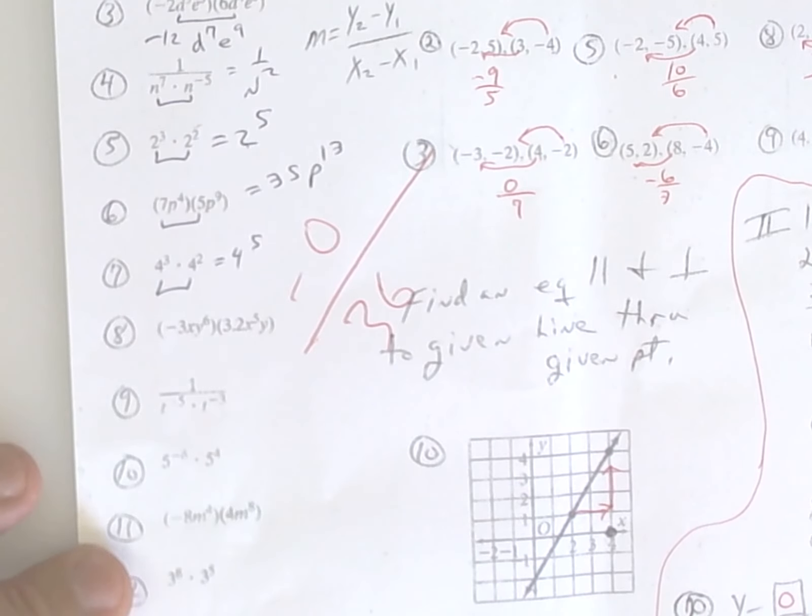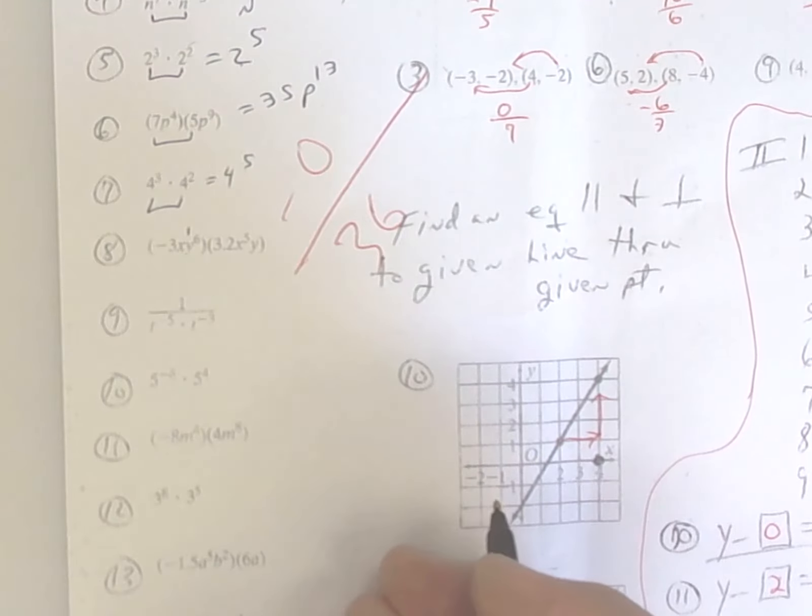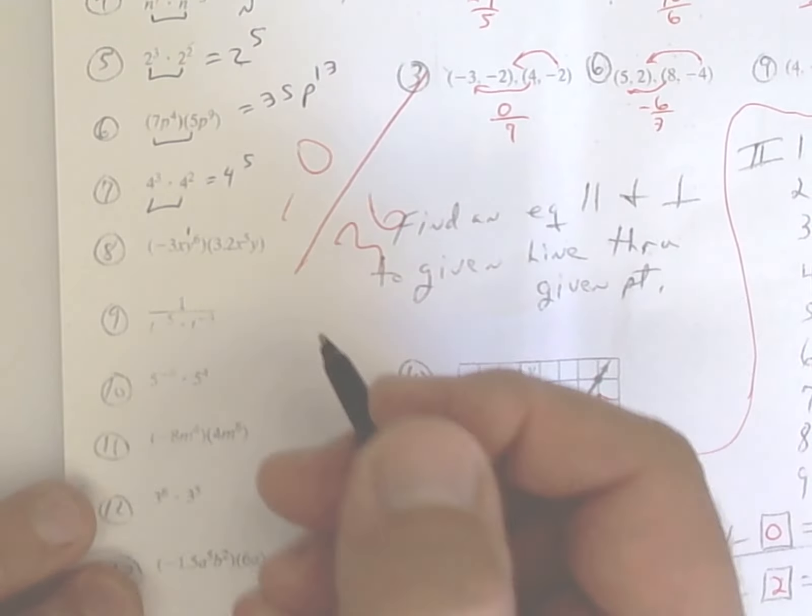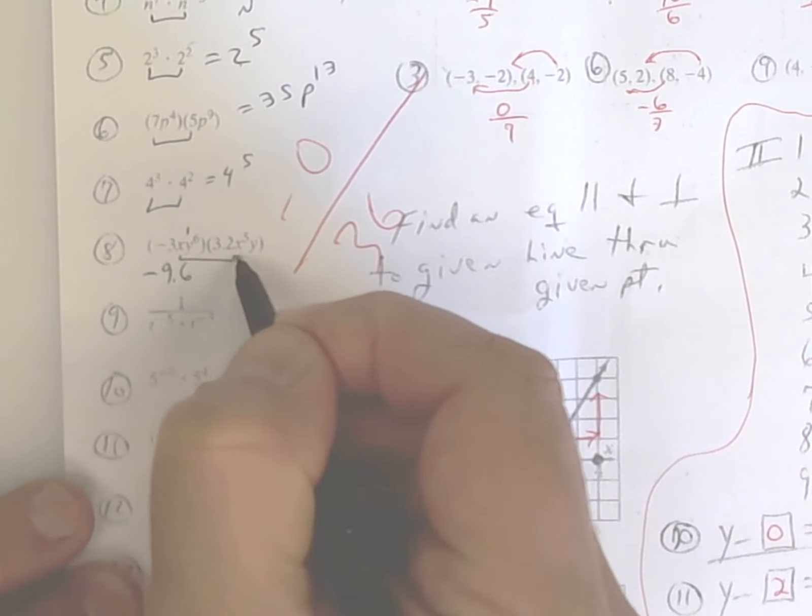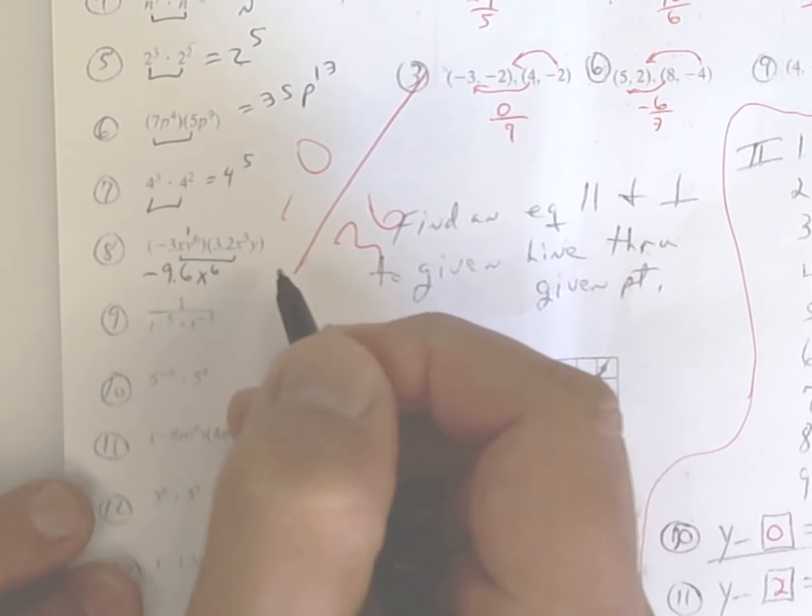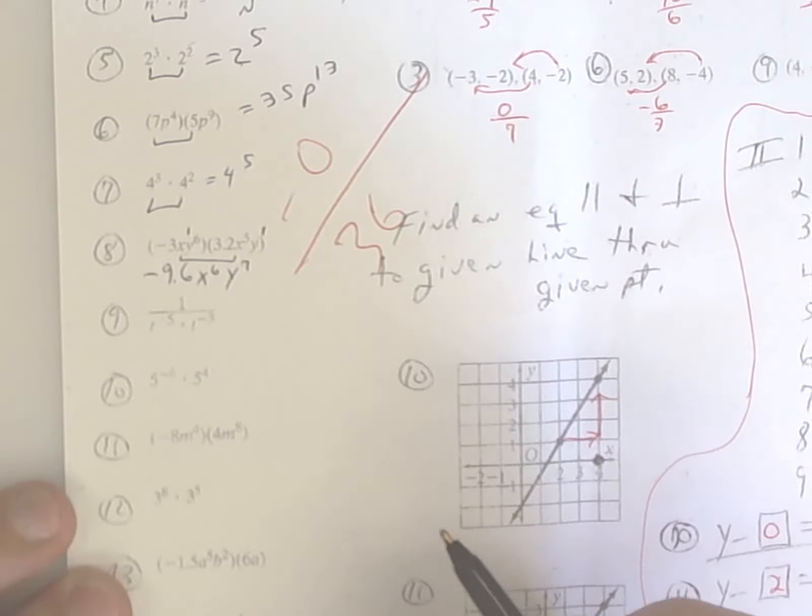All right, on the next one, just remember to put a 1 right here. So you've got negative 3 times 3.2 times negative 3. Gives you a negative 9.6. x1 and x5 makes x6. y6 and y1 makes y7. Not too hard.